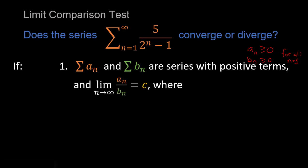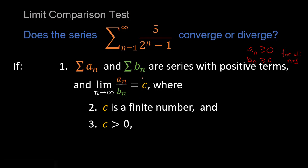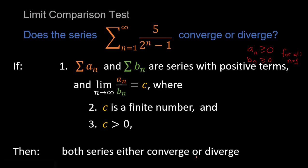This is the limit comparison test, so as you might imagine there is a limit involved. We take the limit of a sub n over b sub n and find that limit equal to c, where c is a finite number and c is greater than 0. If all these criteria are met, we can conclusively and definitively say that both series either converge or diverge. If our summation of b sub n converges, then a sub n also converges; if b sub n diverges, then a sub n also diverges.